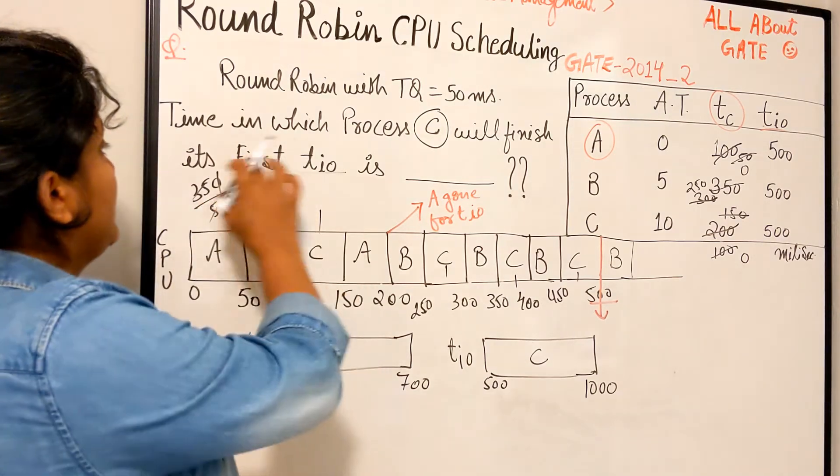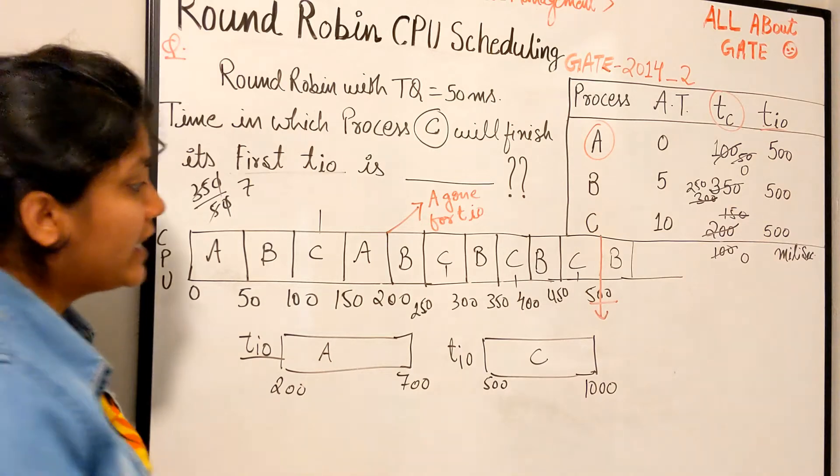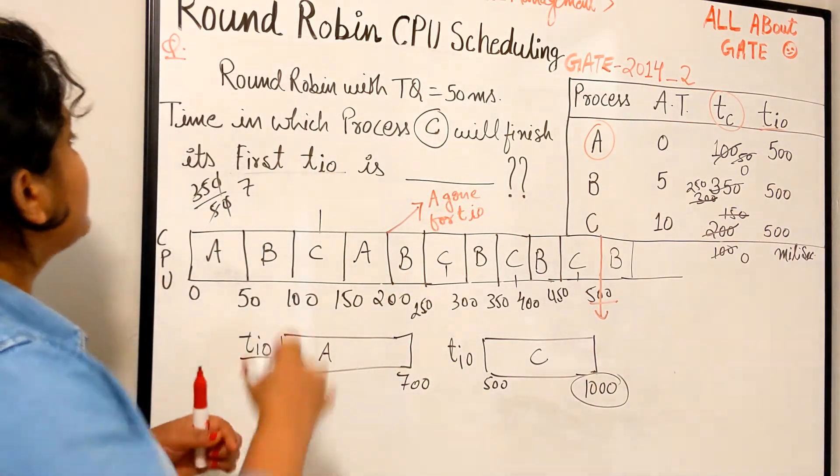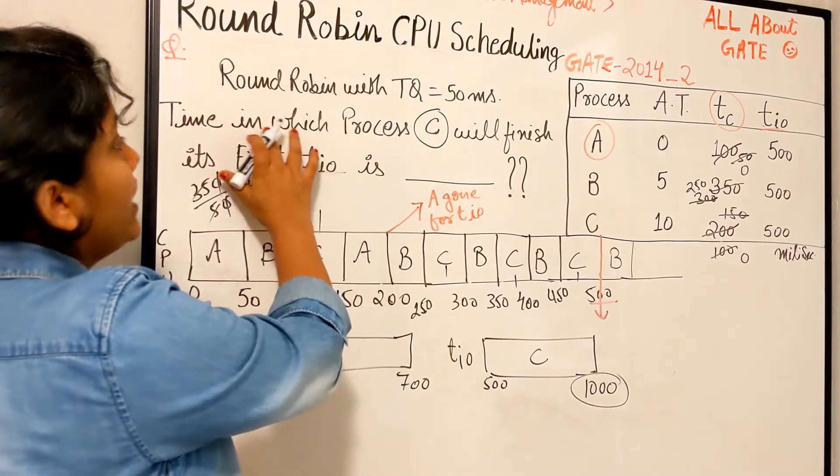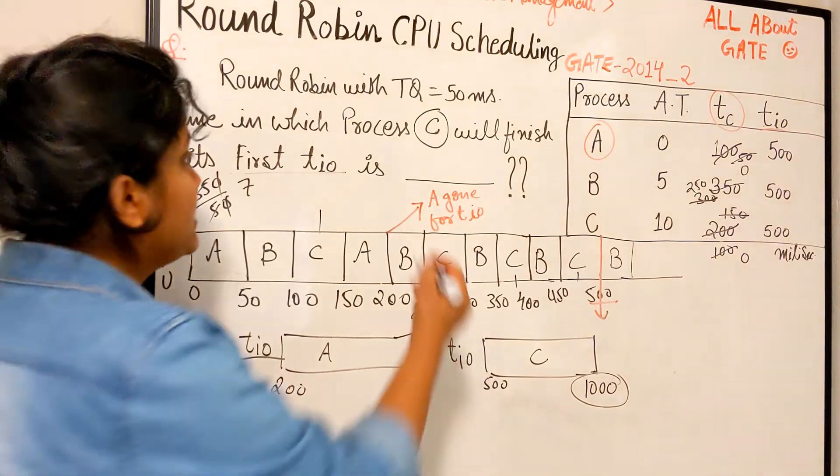Although we are not bothered about them, right? Because we just have to find out the first TIO time for the process C. And that we have already found out, that is 1000. So the answer, the time in milliseconds in which process C will finish its first TIO is nothing but 1000 milliseconds.